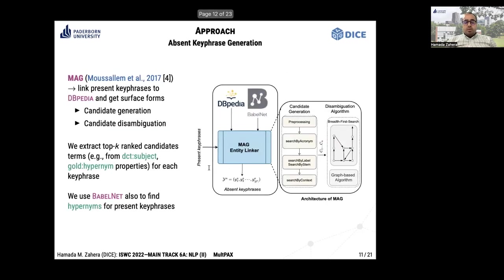In the second component for absent keyphrase generation, we use the extracted present keyphrases from the previous step to find absent keyphrases. In this component we use MAG entity linking, which is an open-source framework that links text phrases with DBpedia. In our approach, we adapt it to link present keyphrases with DBpedia.